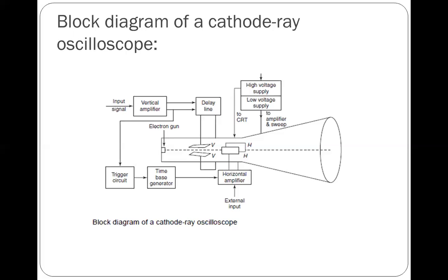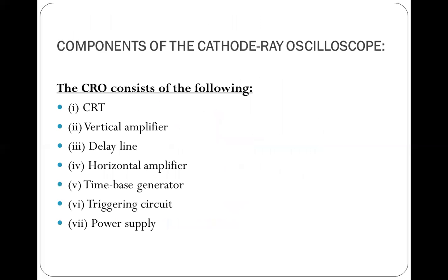Delay line: High-frequency oscilloscopes always include delay lines in the vertical amplifiers. The purpose of such lines is to delay the vertical signal enough to keep it from reaching the CRT deflection plates before the horizontal sweep circuits are running. That's all about the details of the components of the block diagram of a cathode ray oscilloscope.